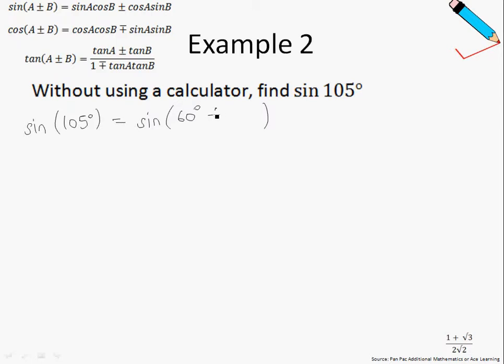actually 105 degrees can be broken down to 60 degrees plus 45 degrees. Now, why did I choose 60 and 45 degrees? Because in the earlier chapter, in chapter 12 rather,